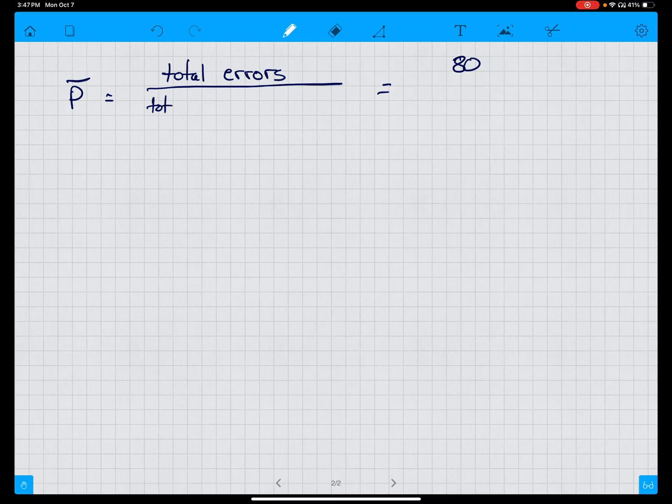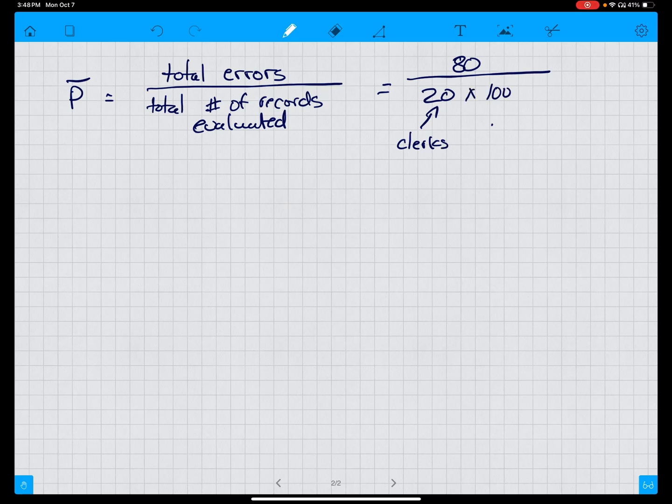That's the total number of errors divided by the total number of records evaluated—and that would be 20 clerks times 100 records—equals 0.04. So p-bar, the average number of errors, the average proportion of errors from a hundred samples, is 0.04 or four percent.